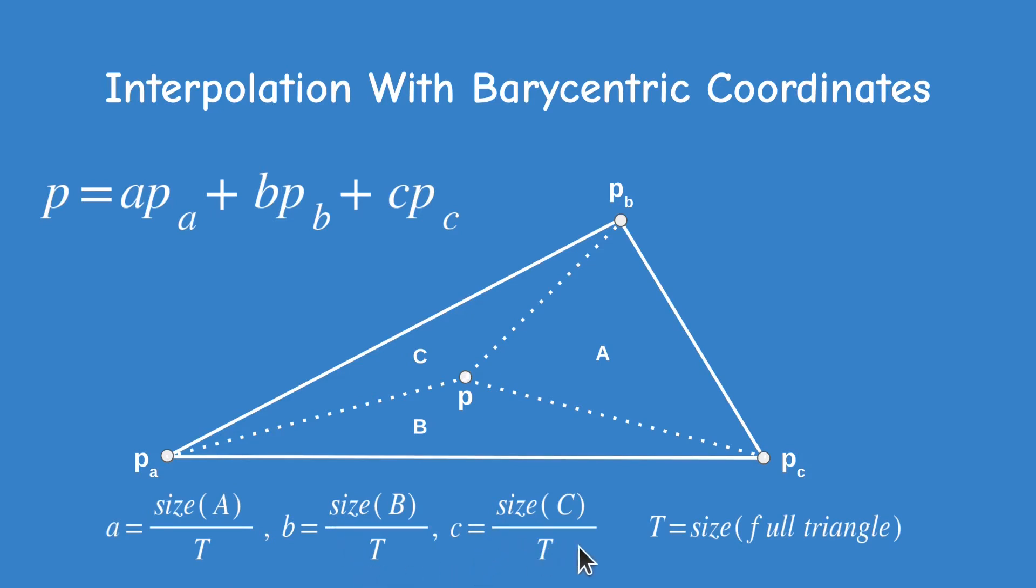Notice that I intentionally named the smaller triangle uppercase A, B and C in that specific order. Each of these triangles is opposite to its lowercase counterpart barycentric coordinate. This makes sense intuitively. For example, as the uppercase triangle A grows larger, it means that we are getting closer to attribute pA. Therefore the ratio of uppercase A divided by the full triangle becomes closer to 1. As we have seen earlier, this is the expected behavior of barycentric coordinates.